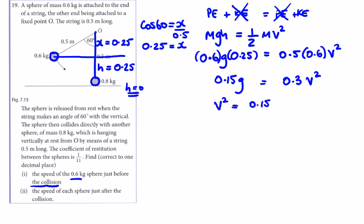So 0.3v² means v² equals 0.15g over 0.3, that's 1/2, so v² equals g/2.